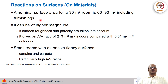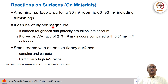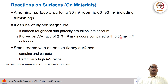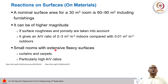For a nominal surface area in a 30 cubic meter room, we will have 60 to 90 square meters of area available for reaction, generally including furnishings. This can be even higher if we account for surface roughness or porosity. Overall, we have an area to volume ratio of 2 to 3 square meters per cubic meter indoors, compared to 0.01 square meters per cubic meter outdoors — about 100 to 300 times more area to volume ratio indoors. Small rooms with fleecy surfaces such as curtains and carpets will have even higher ratios.